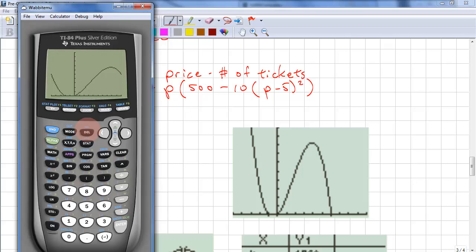So we want to search for the maximum. Second calc. And 4. Left bound somewhere to the left of that peak. And right bound somewhere to the right of the peak. And hit enter for the guess.